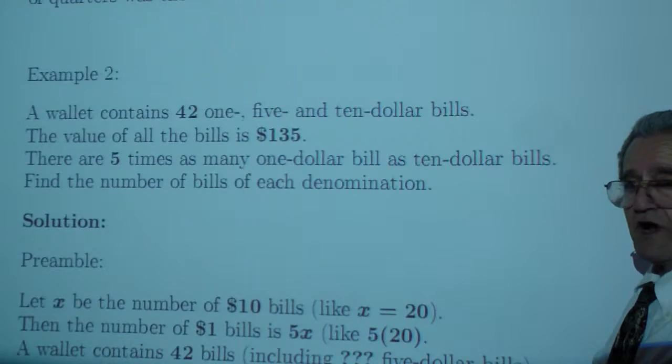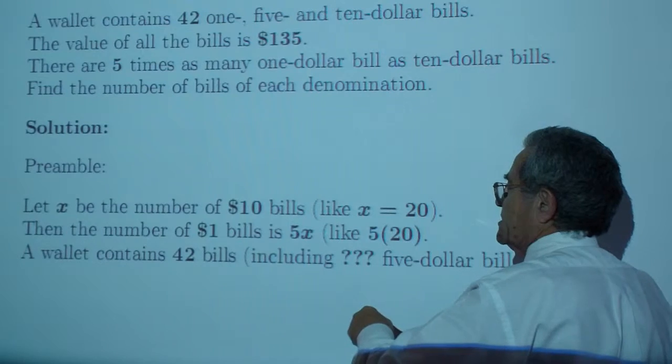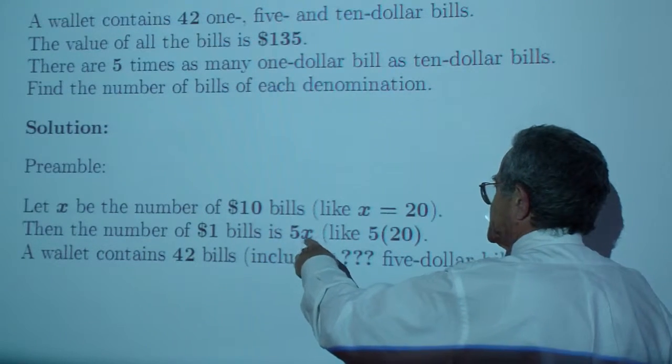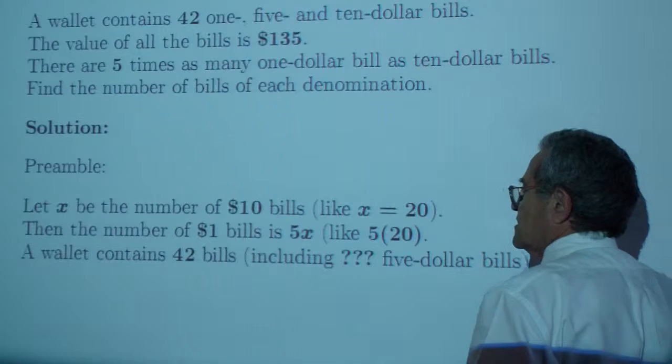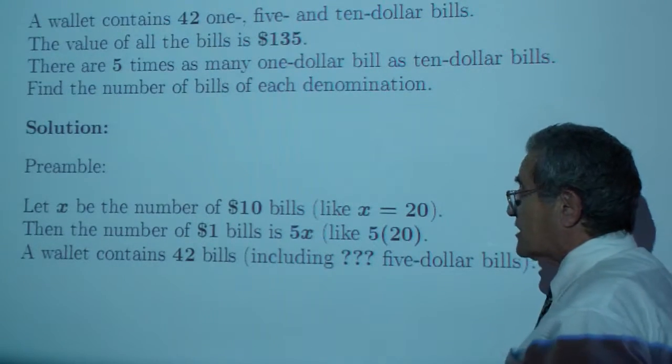Again, I know the answer to one of these. Let X be the number of $10 bills. Then the number of $1 bills is 5 times that, or 5X. And the wallet contains 42 bills, including how many $5 bills?